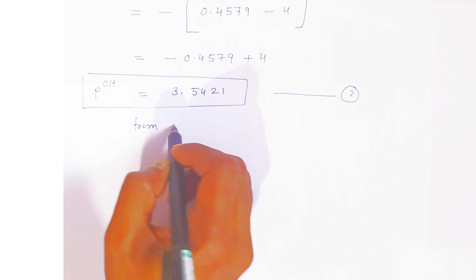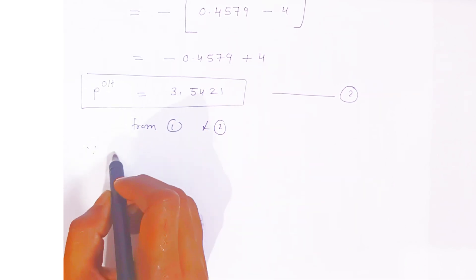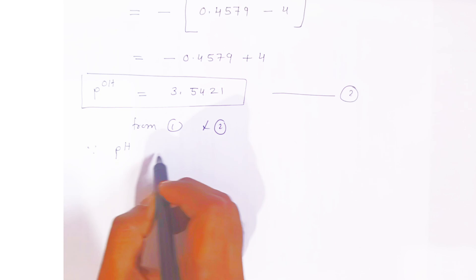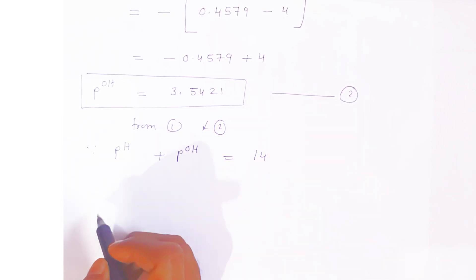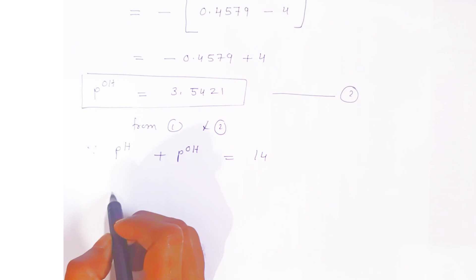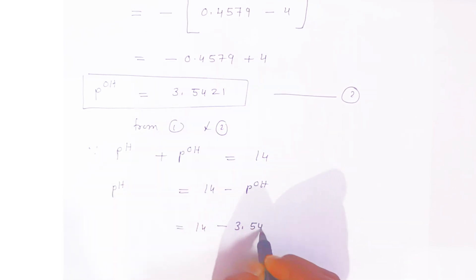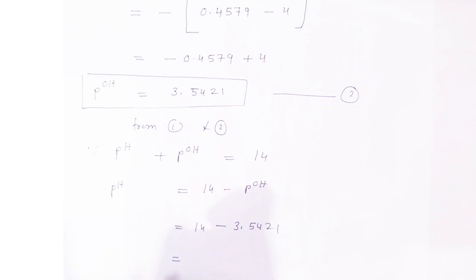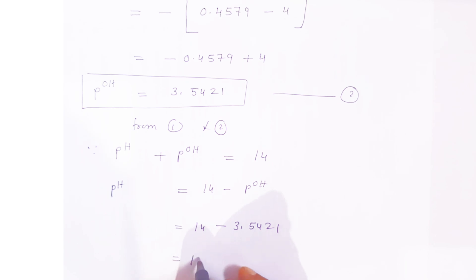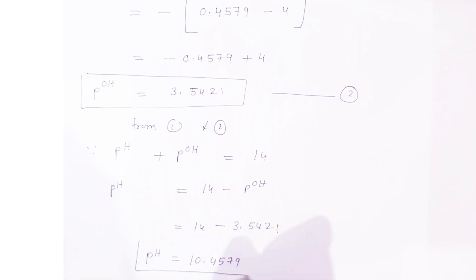Now you know the pOH, so put this value into the equation: pH plus pOH is always equals to 14. Since we want pH, pH will be equals to 14 minus pOH. So 14 minus 3.5421 — when you subtract, you will get 10.4579. So this way you can calculate the pH of the solution.